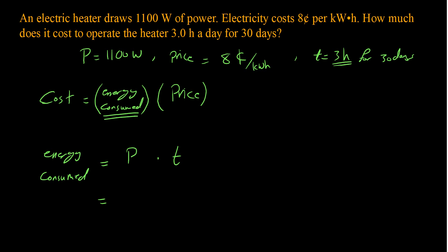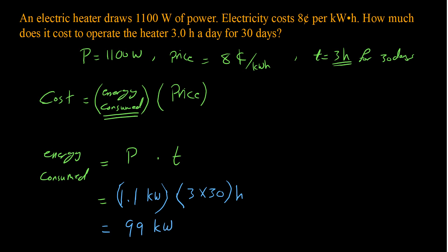The energy consumed equals power multiplied by time. The power needs to be in kilowatts, so 1100 watts becomes 1.1 kilowatts. For time, I need total hours: 3 hours times 30 days gives me the total hours this heater has been running over the 30 days. Doing the math, that gives me 99 kilowatt hours.